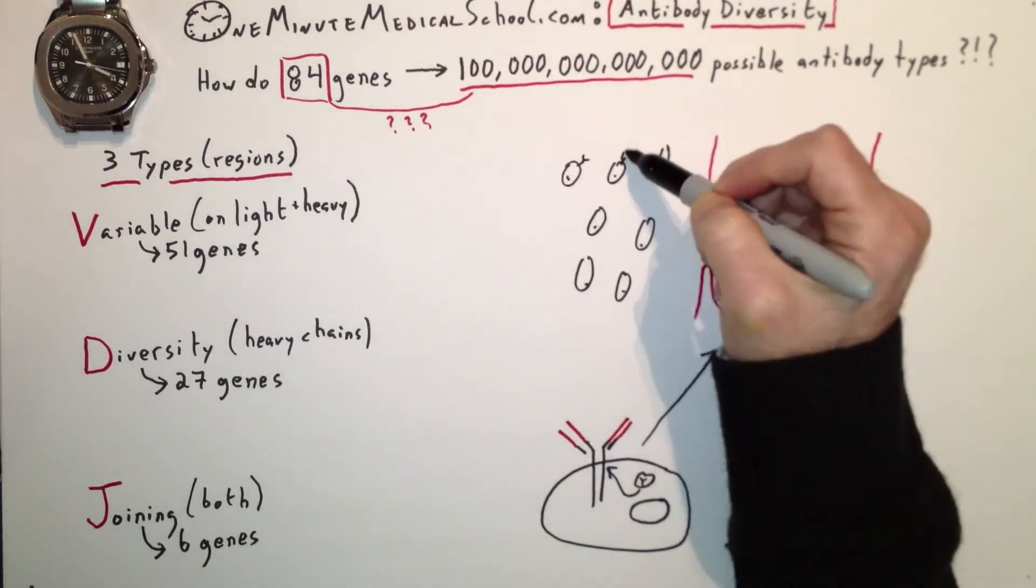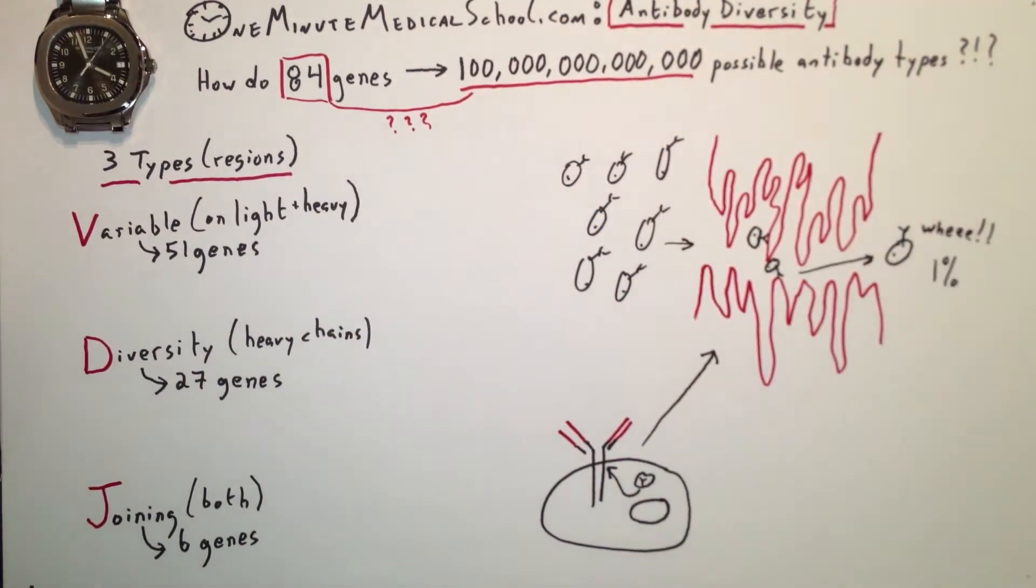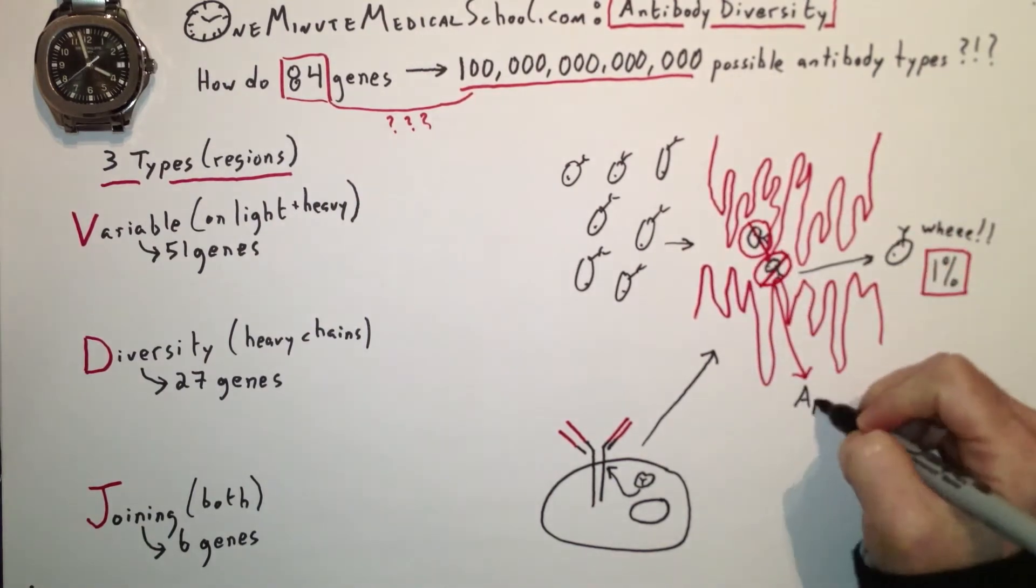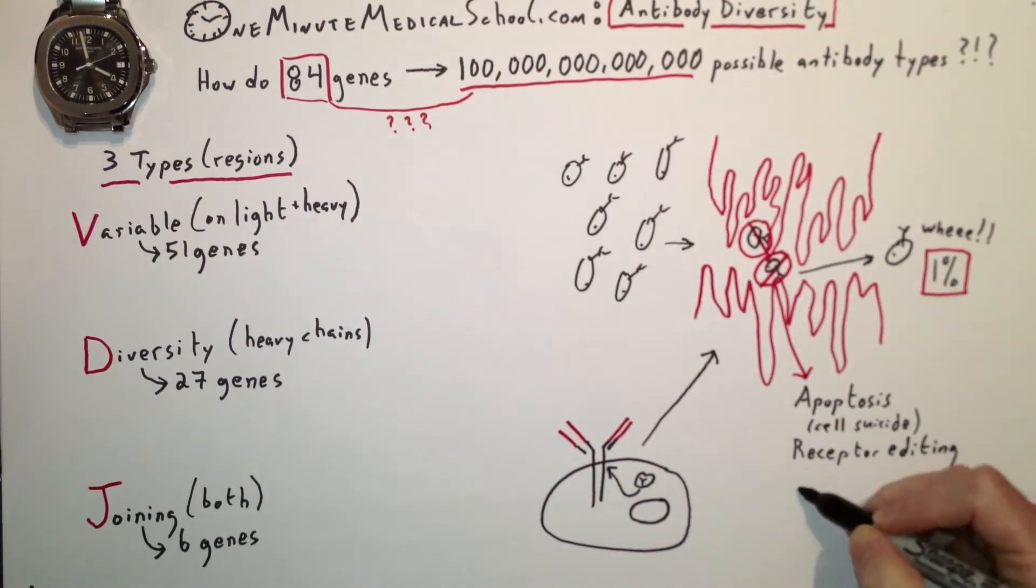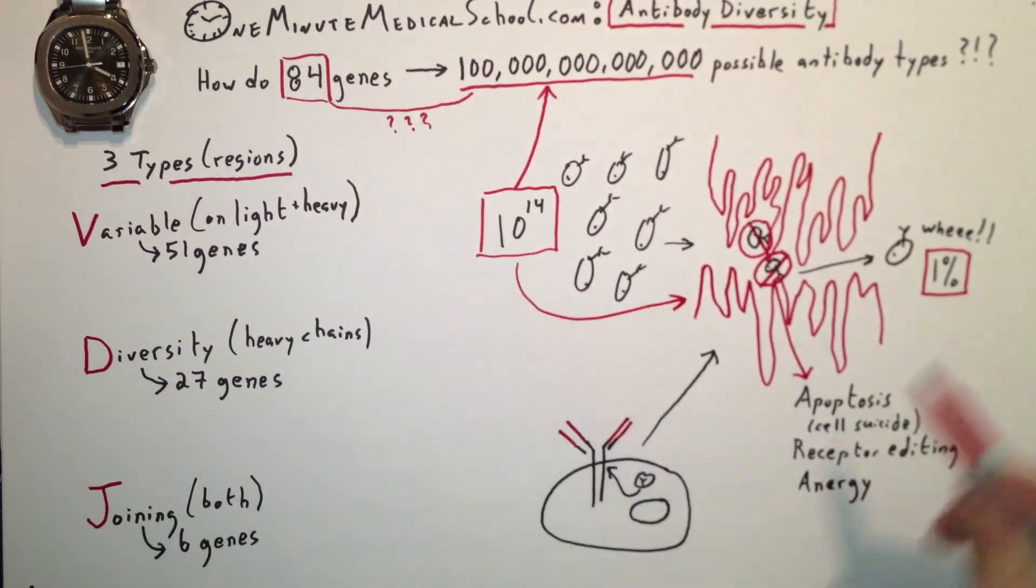Next, we run all these B cells through our own proteins. Only 1% survive. The other ones die, they shuffle the deck again, or they become indolent. And from those, we get 1 trillion possible antibodies.